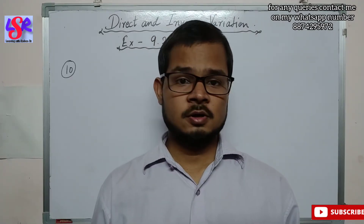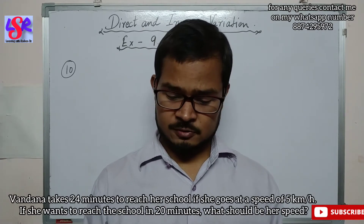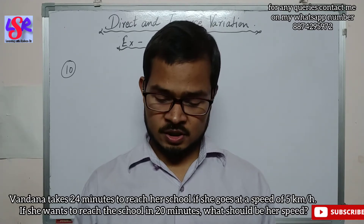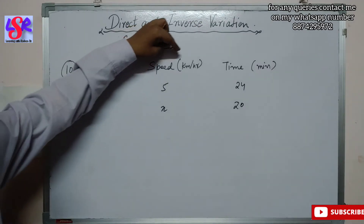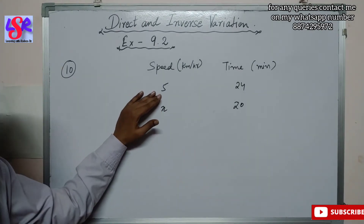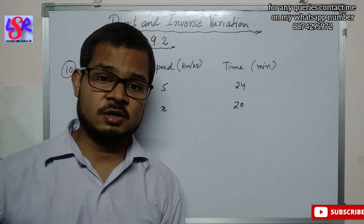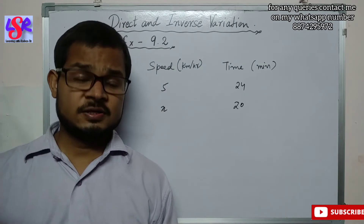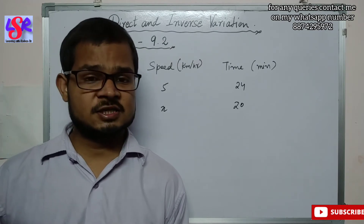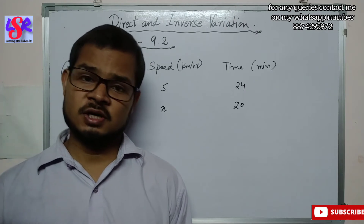Now let's do question number 10. Vandana takes 24 minutes to reach her school if she goes at a speed of 5 km/h. If she wants to reach the school in 20 minutes, what should be her speed? As we know, moving at a higher speed takes less time, and moving at a lower speed takes more time to reach the destination. So this is also a case of inverse variation.